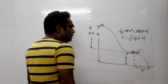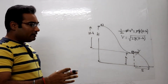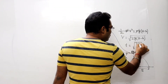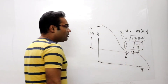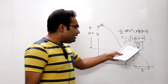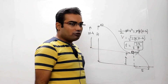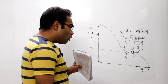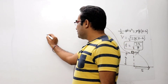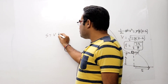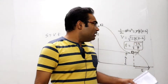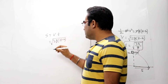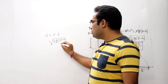कोई भी object को horizontal project किया जाए तो small h height गिरने में जो time लगता है वो t = √(2h/g) होता है — यह हमने kinematics में सीख रखा है। Horizontal direction में कोई force नहीं लग रहा है, इसलिए S = v × t। V का value है √(2g(H − h)) और t का value है √(2h/g)।